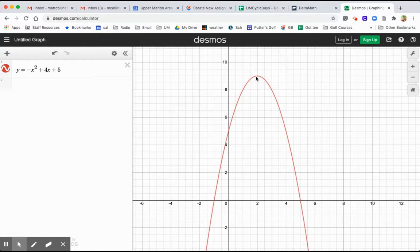I can almost tell that the parabola, like if you just look, 2 comma 9 is the vertex right there. And the intercepts are at 5, 0 and negative 1, 0.